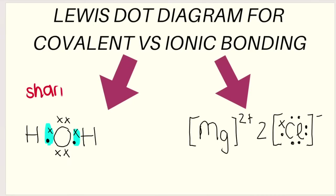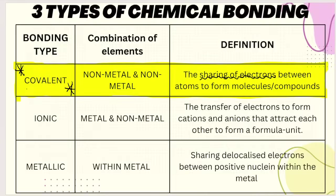Sharing is the most important thing, and non-metal and non-metal is the second most important thing. With ionic bonding, ionic bonding is different to covalent bonding in that ionic bonding involves the transfer of electrons to form cations, which are positively charged particles, and anions, which are negatively charged particles. Those two things — the positives and the negatives — attract each other and they form a formula unit, or an ionic compound. There's no sharing of electrons; there's a transfer of electrons.